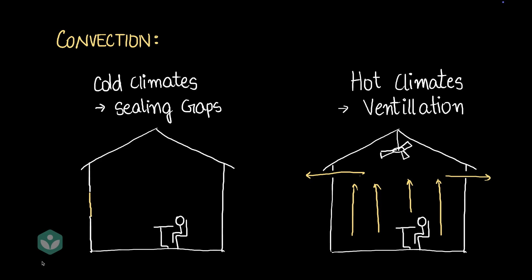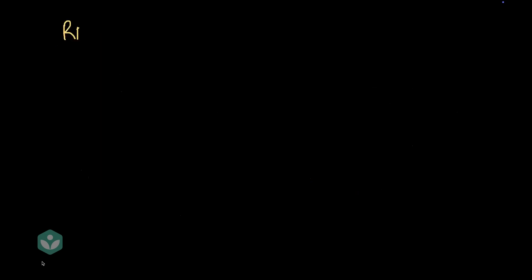Okay, so that was how we dealt with convection. What about radiation? One of the ways we can deal with radiation is, let's say it's a cold climate.